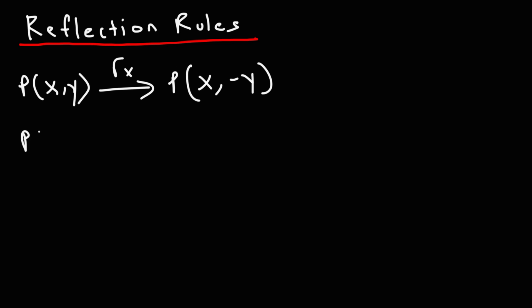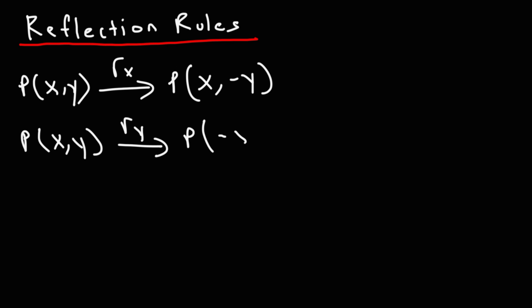Now what about reflecting the same point (x, y) about the y-axis? In this case you need to multiply x by negative 1, so it's going to become (negative x, positive y). That's how you can reflect it about the y-axis.